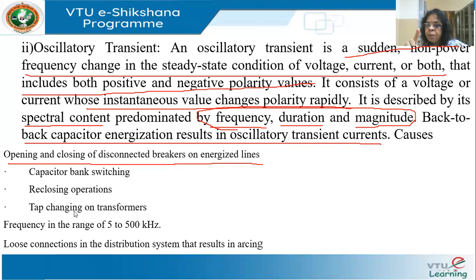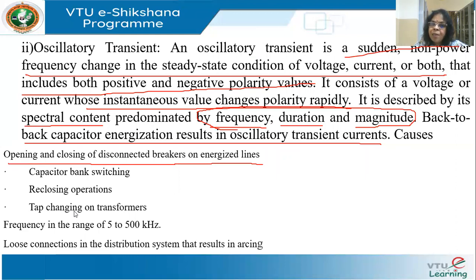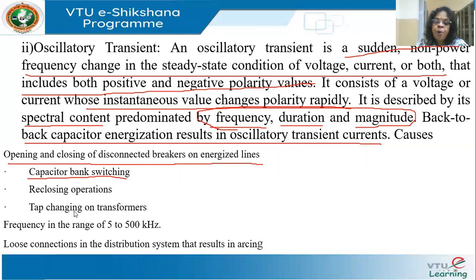A line is an RLC circuit, and with capacitors added for power factor correction, you have RLC circuits that can cause oscillations — under-damped, over-damped, or critically damped. Other causes include capacitor bank switching, reclosing operations of switches, and tap changing on transformers. When you change a transformer tap, you interrupt current as contacts move from one tap to another, causing transients. Normally, these oscillatory transients are in the range of 5 to 500 kilohertz.